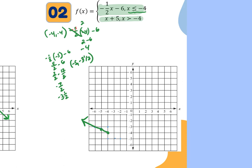For the next piece — greater than negative 4 — plug in negative 4 with an open dot: negative 4 plus 5 equals 1, so the point is negative 4, 1, open dot. Then plug in the next value like negative 3: negative 3 plus 5 equals 2, so negative 3, 2 is the next point. The arrow continues in that direction. For lines, drawing and erasing works fine, but when it's an x squared or square root and you're unsure of the shape, that's when you want to plug in some points.